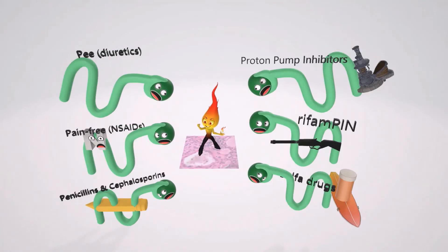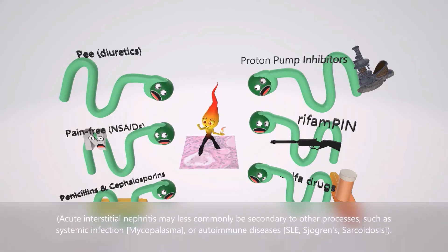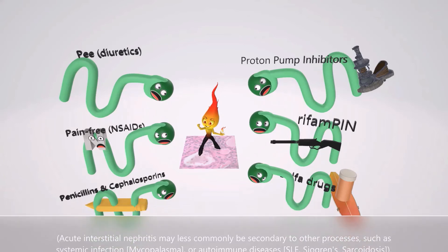Acute interstitial nephritis may less commonly be secondary to other processes, such as systemic infections — for example, mycoplasma — or autoimmune diseases such as Sjögren's syndrome, SLE, or sarcoidosis.